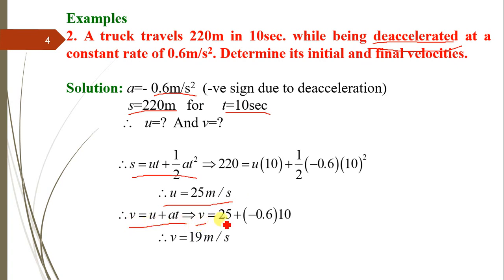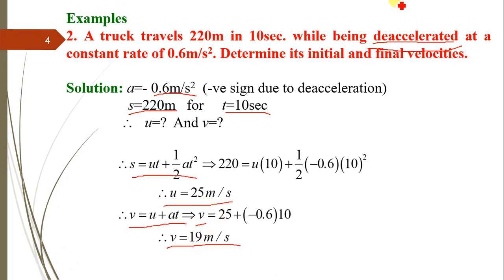Using v = u + at: v = 25 + (−0.6)(10) = 19 m/s. So the truck starts with a velocity of 25 m/s and due to deceleration its final velocity is 19 m/s, covering a distance of 220 meters in 10 seconds.